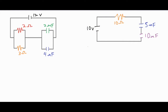In this video we're going to be taking a look at two different RC circuits where we analyze what the current is initially after the switch is closed, and then also what the charge, delta V, and total capacitance is for the capacitors involved in each of the circuits. Let's go ahead and take a look at this one on the left first.